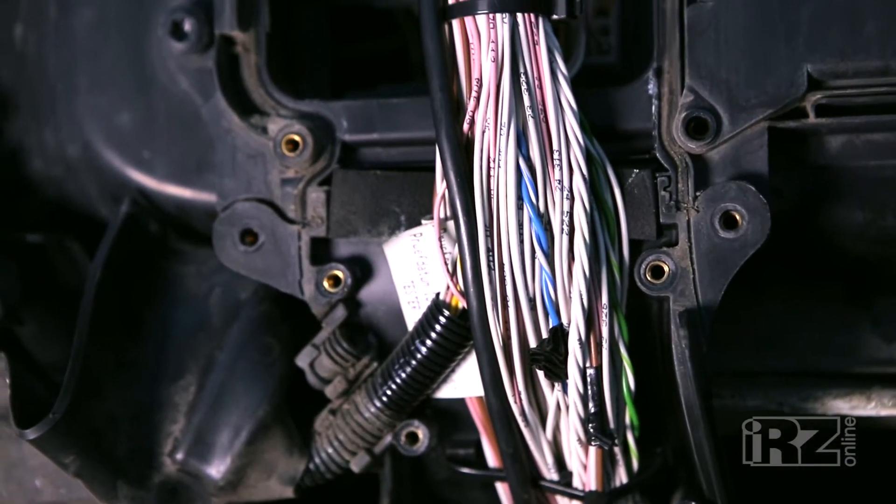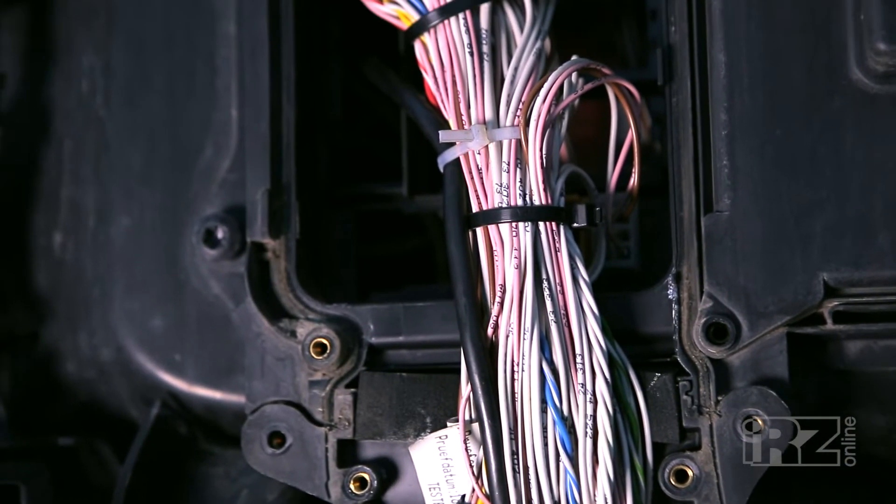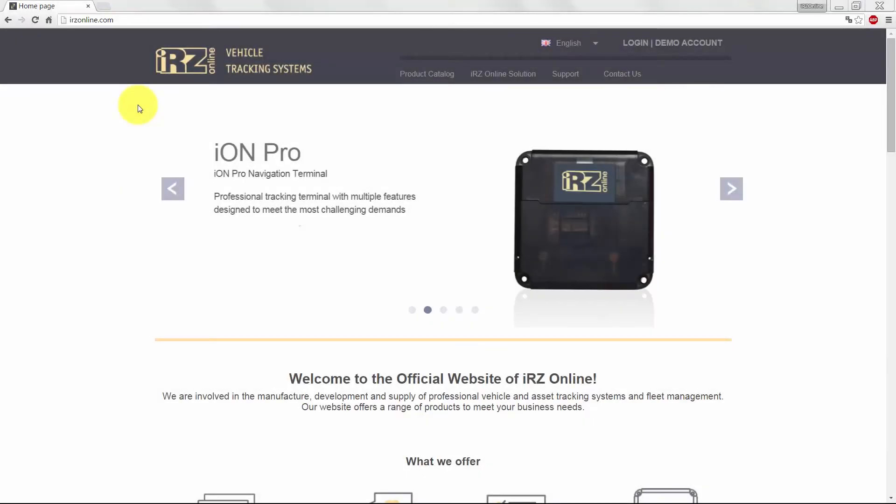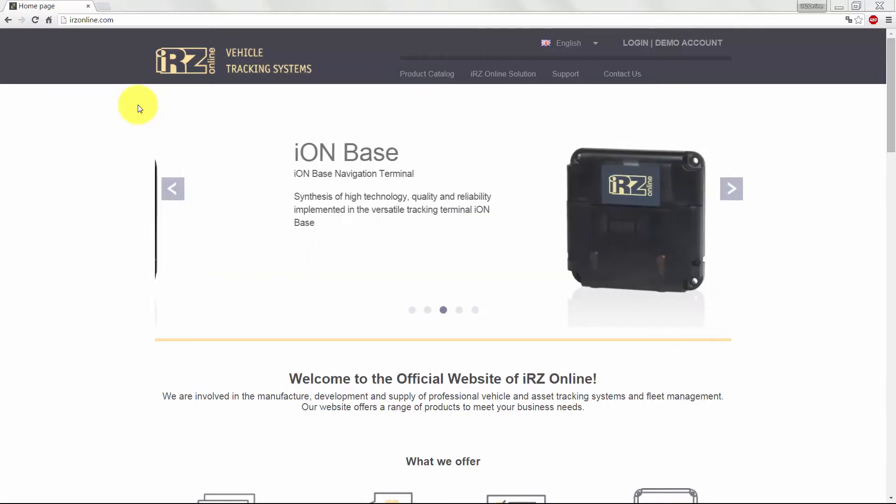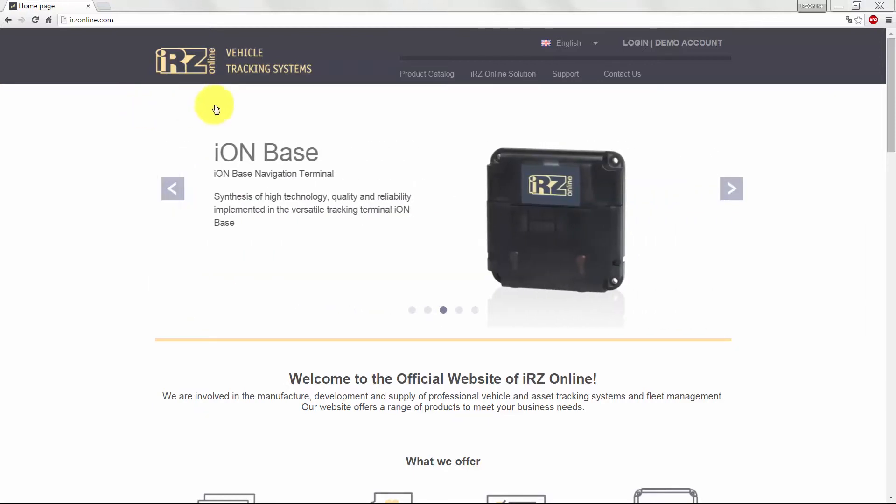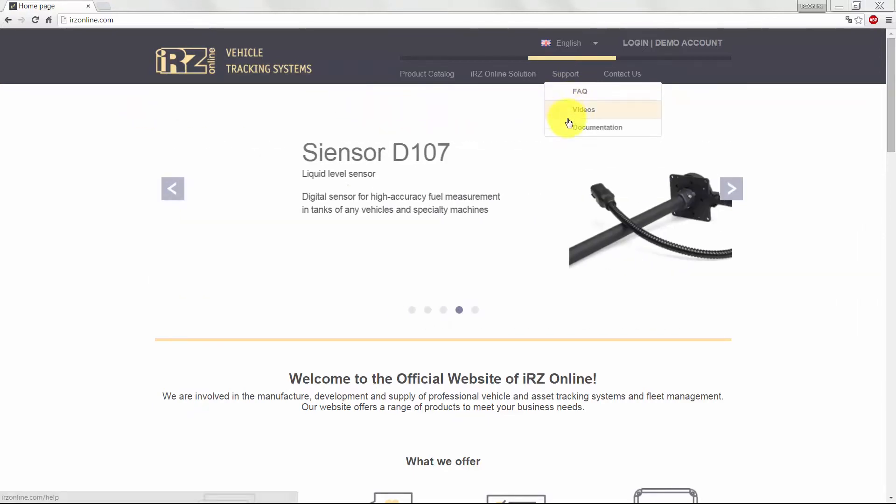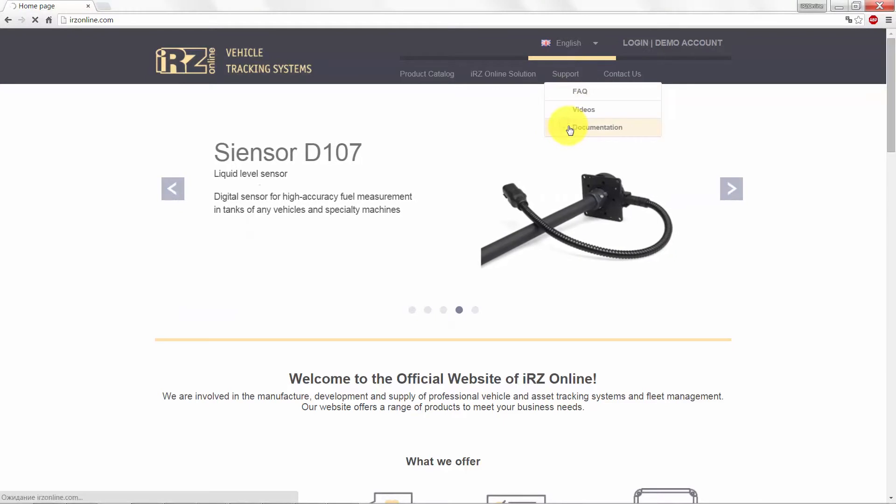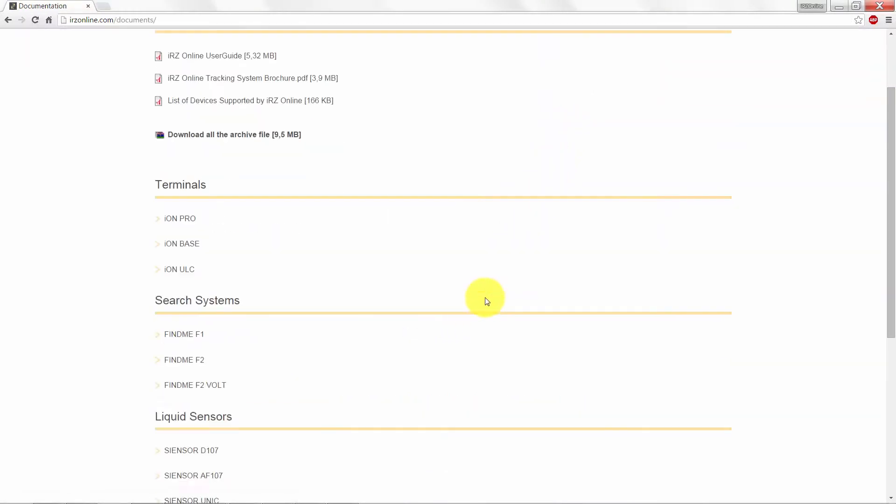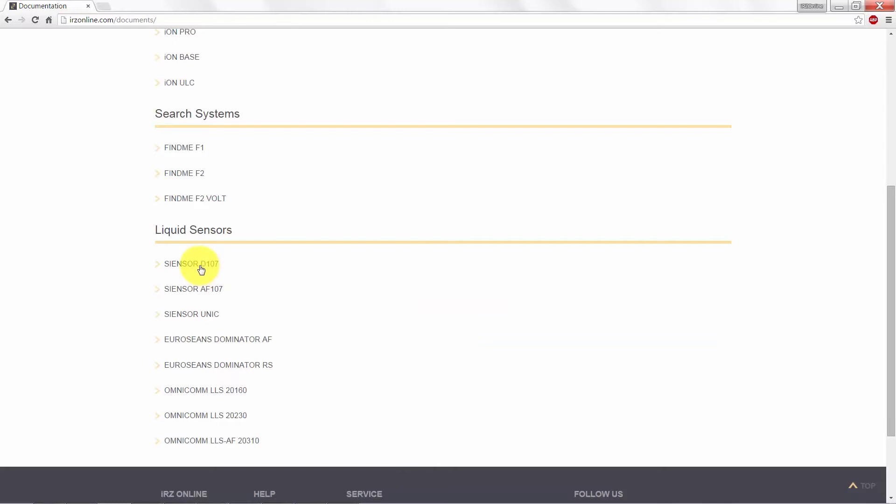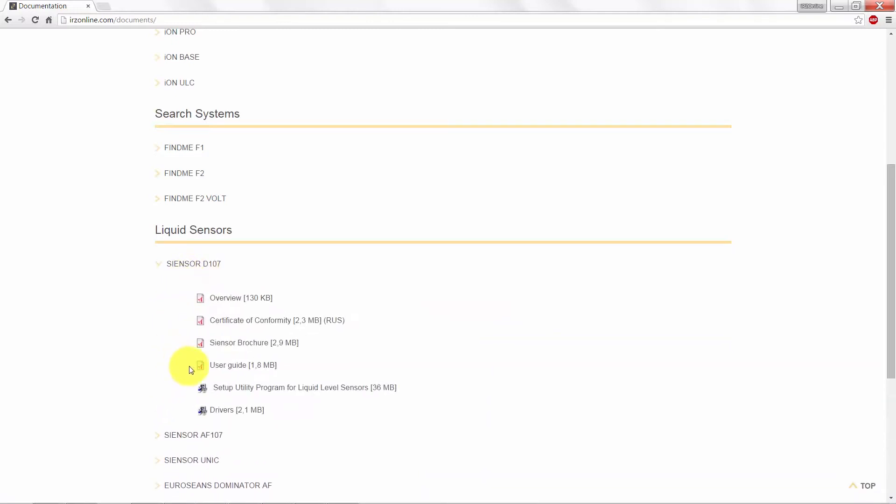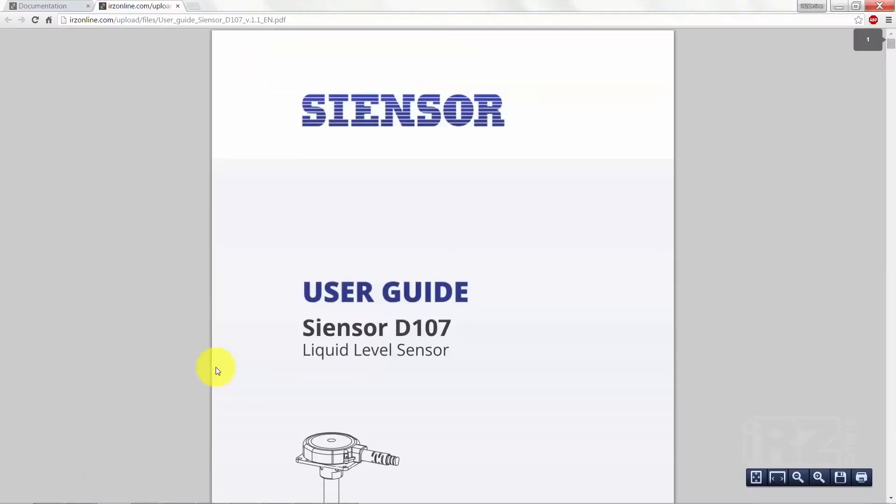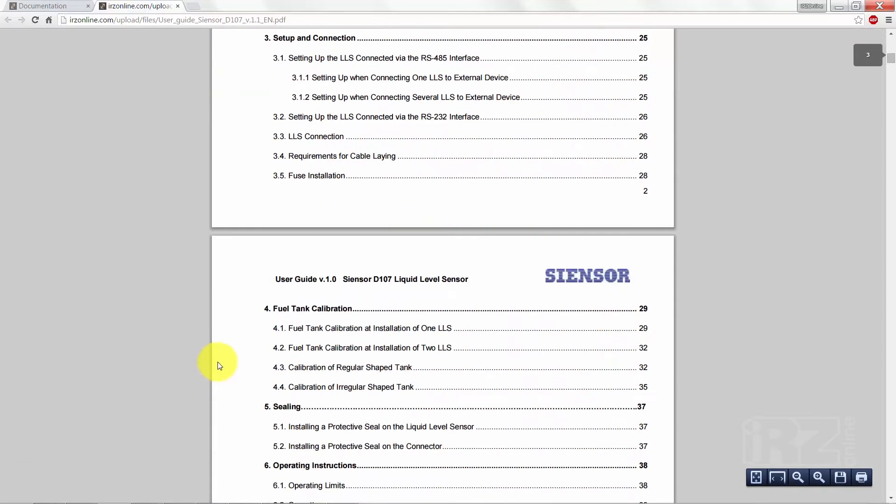The assignment of the connector pin and the wires color of the cable for the connection with the navigation terminal are listed in the sensor Censor D107 User's Guide. You can find it on our website, Section Support, Documentation, Fuel Level Sensors, Censor D107 User's Guide, Section Requirements for Cable Laying.